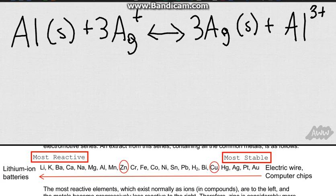Since the aluminum is further to the left on the more reactive side, and silver is further to the right on the more stable side, we know that aluminum is going to react to form the more stable silver, and so we know that this reaction is therefore spontaneous.